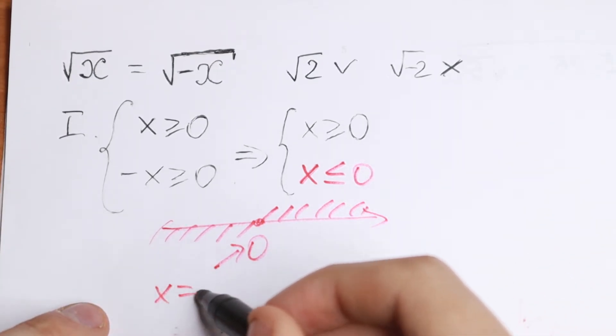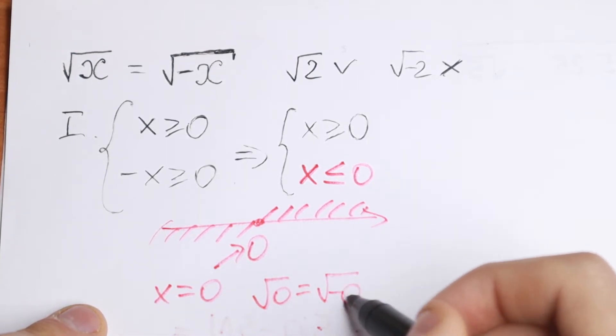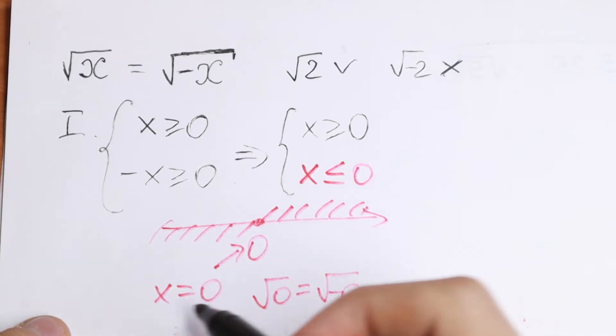So x equals zero. If we check it, we have square root of zero equals square root of minus zero, which is correct.